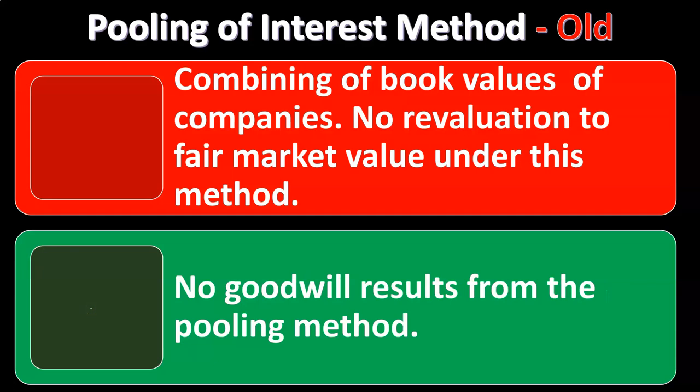If we were to use the pooling of interest method, there would be no goodwill as a result. The concept of goodwill is that there's something in this company of value above and beyond what's reflected on the balance sheet. If you take assets minus liabilities, that gives you net assets — the equity section — which is the book value of the organization. If you were to have a purchase situation where book value exactly equaled market value, you would think the purchase price would be directly for the equity value of the organization.